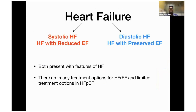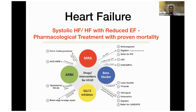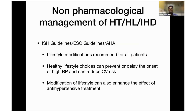Heart failure can be divided into systolic heart failure — heart failure with reduced ejection fraction — or diastolic heart failure — heart failure with preserved ejection fraction. Both present with features of heart failure and dyspnea. There are many treatment options for heart failure with reduced ejection fraction, but limited options for heart failure with preserved ejection fraction. The drugs used for heart failure with reduced ejection fraction include: MRA (spironolactone), ARNI (sacubitril/valsartan), SGLT2 inhibitors (empagliflozin and dapagliflozin), and beta-blockers.